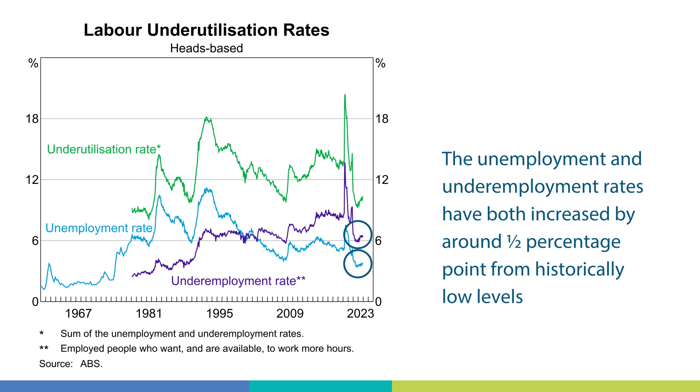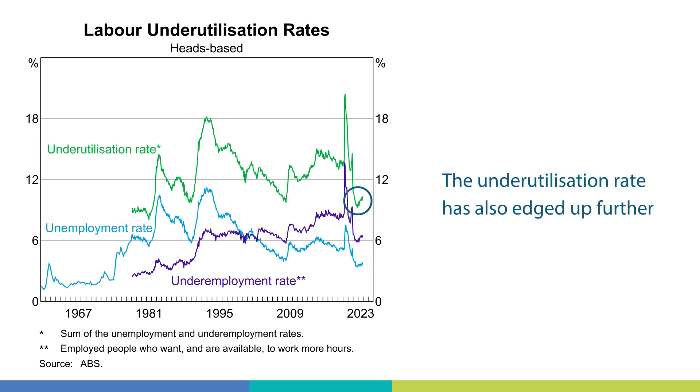But you can see that this is from historically low levels. The underutilisation rate, which is the green line, is the sum of the unemployment and underemployment rates and has also edged up further. Digging a bit deeper, a range of other indicators are also pointing to demand for labour growing a bit more gradually in response to slower economic growth. And at the same time, the supply of labour has increased.